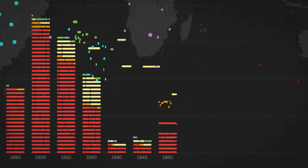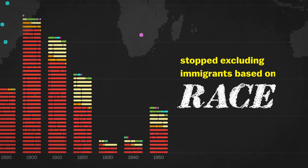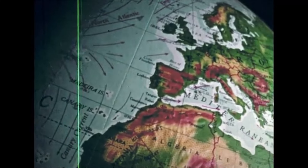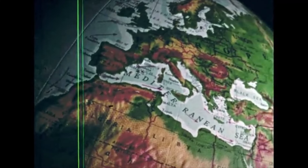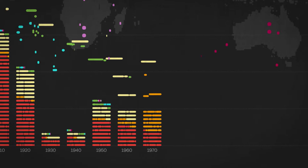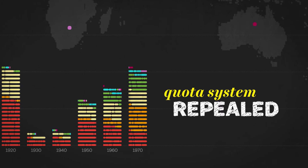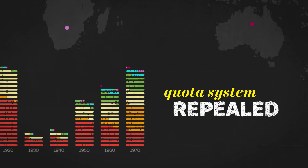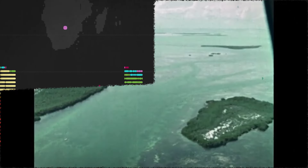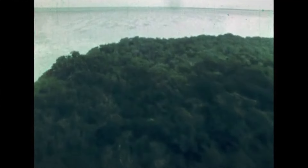In 1952, the U.S. stopped excluding immigrants based on race, but more stringent quotas meant most slots were still for Western Europeans. In 1965, the quota system was entirely repealed, allowing for a far more diverse group of immigrants, particularly from Central America and South America, but also Asia.